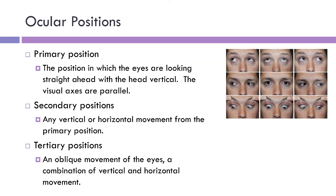More broadly, we can categorize the cardinal positions into primary, secondary, or tertiary positions. The primary position is the straight-ahead position. A secondary position is any purely vertical or horizontal movement from primary, including elevation, depression, dextroversion, and levoversion. Tertiary positions involve a combination of vertical and horizontal movement — the four corner positions: levo depression, levo elevation, dextro elevation, and dextro depression are all considered tertiary positions.